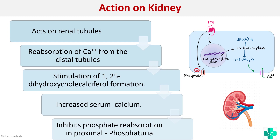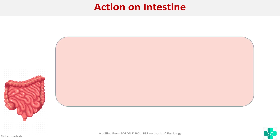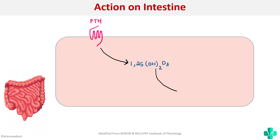Next, the action on the intestine: parathormone acts on its receptor, and importantly, parathormone activates vitamin D. It is through vitamin D that there is increased calcium absorption from the intestine. So parathormone does not act directly on the intestinal cell; it acts indirectly through vitamin D.